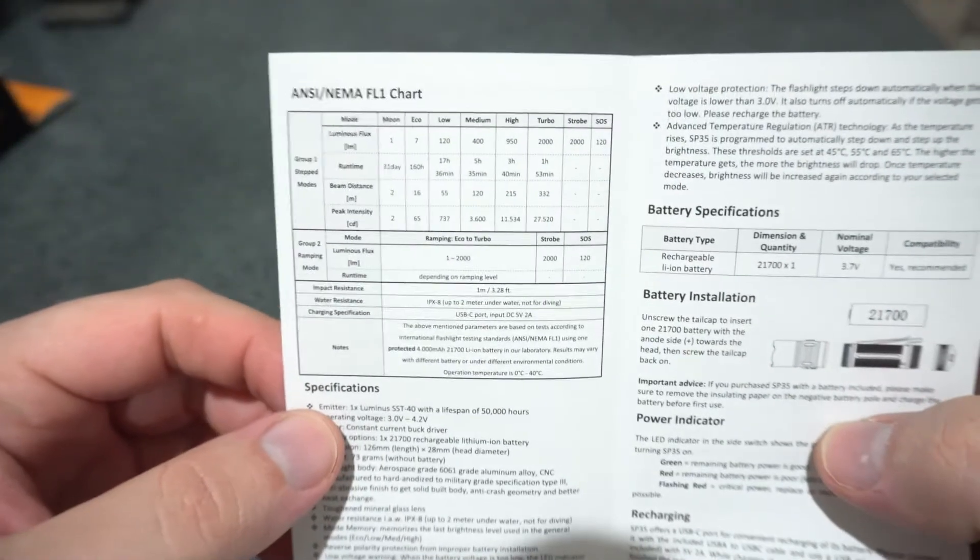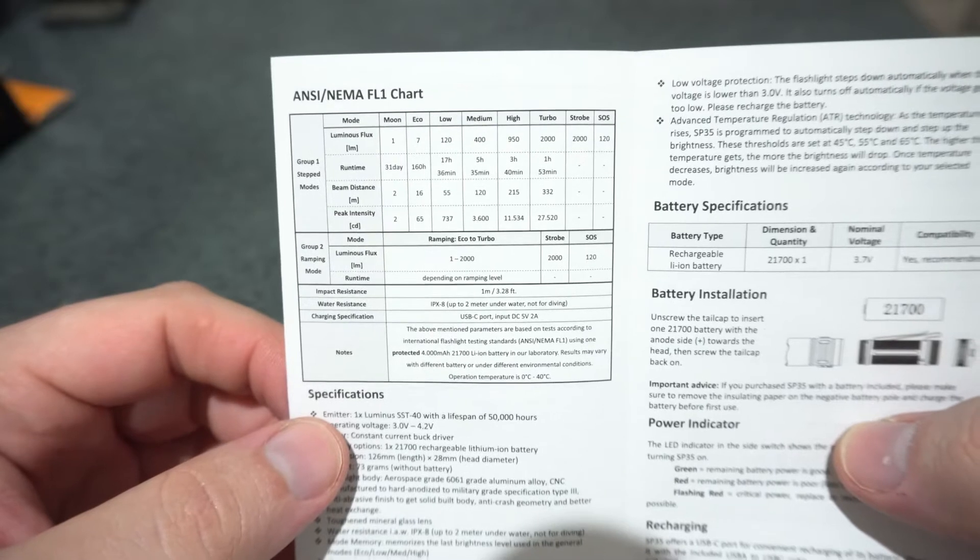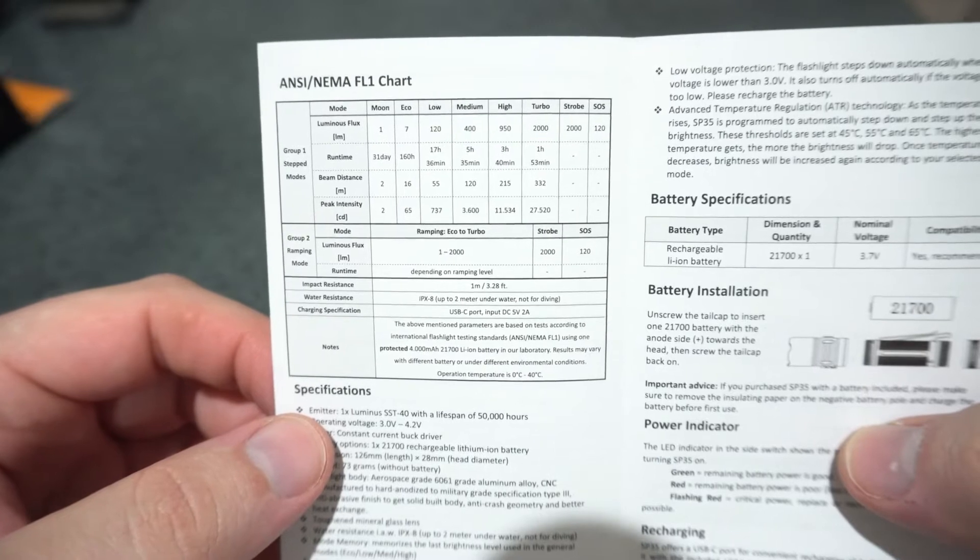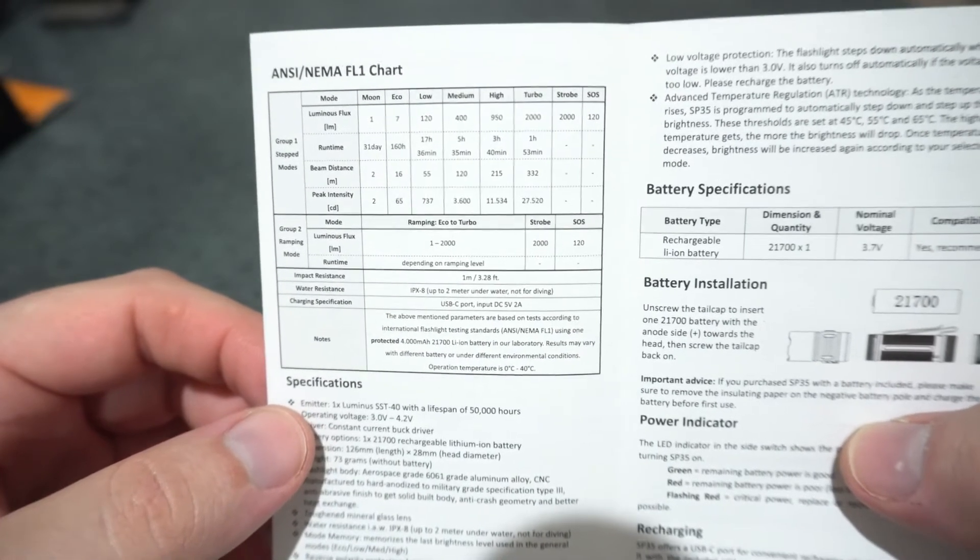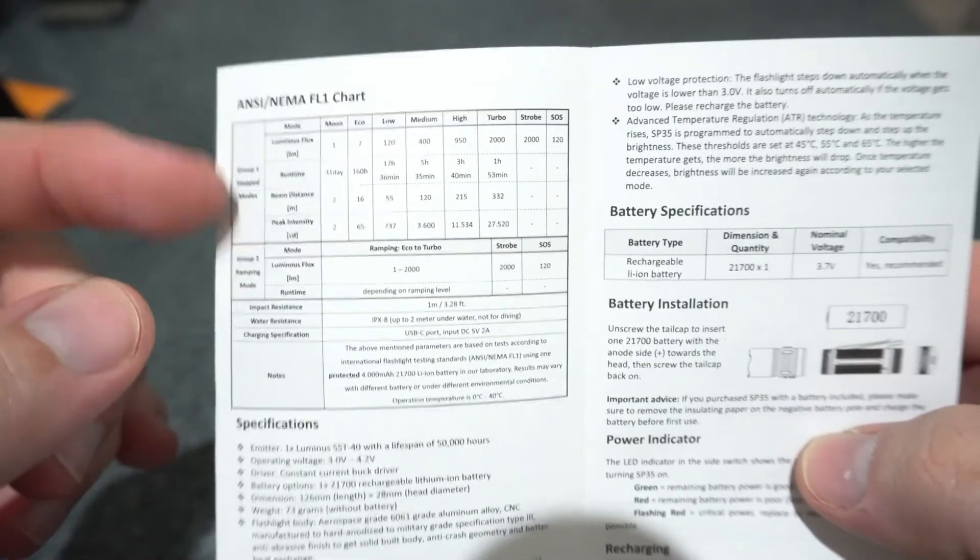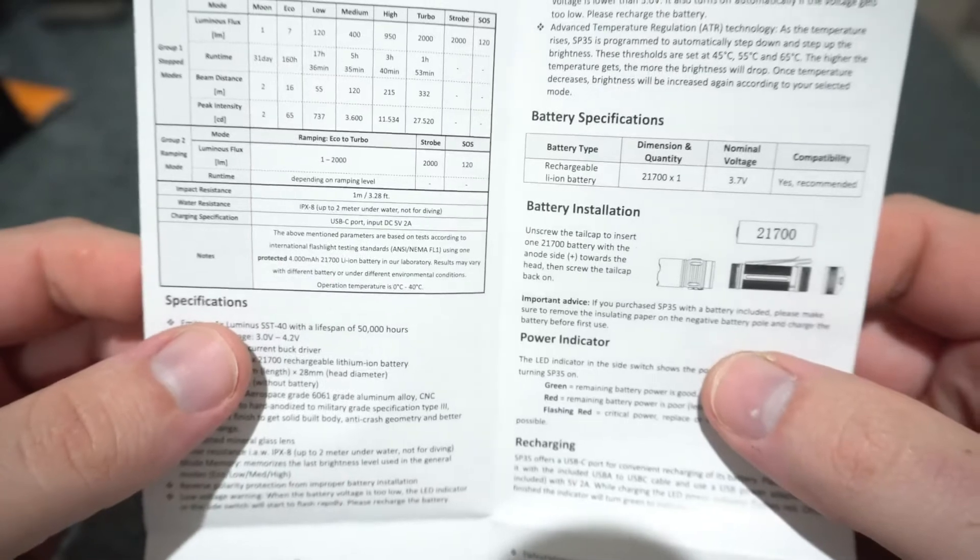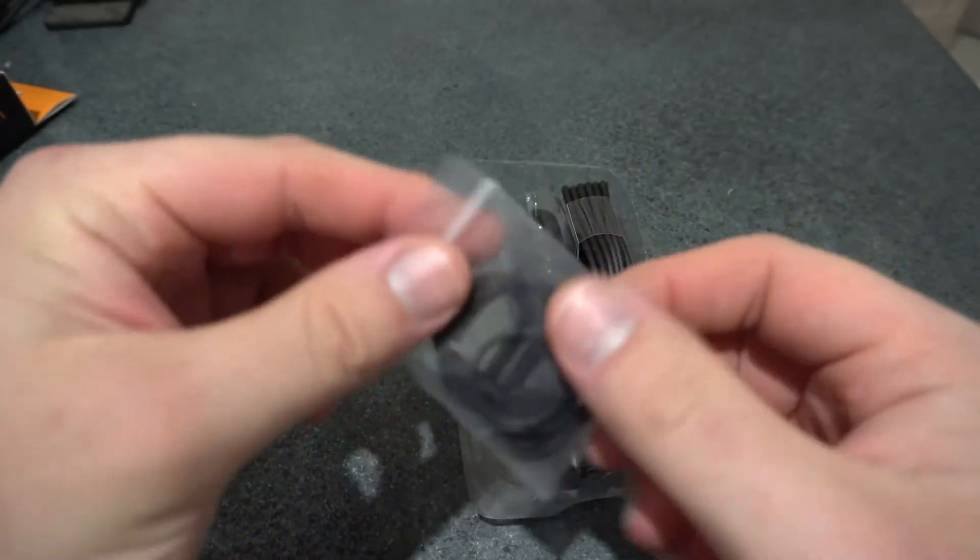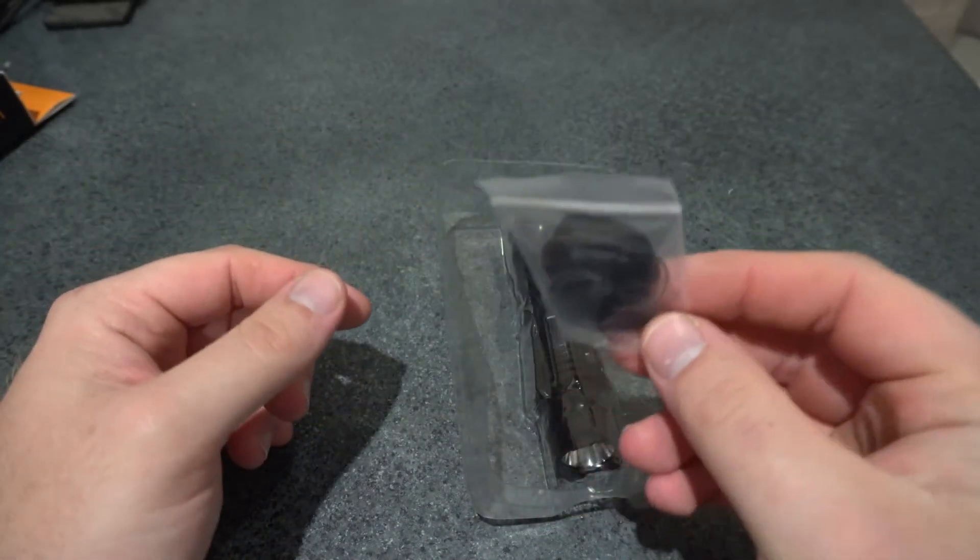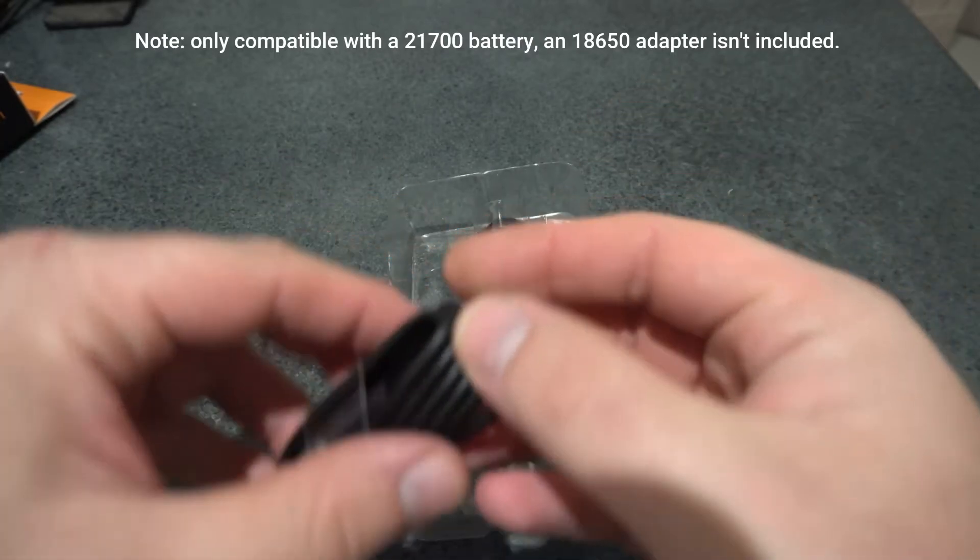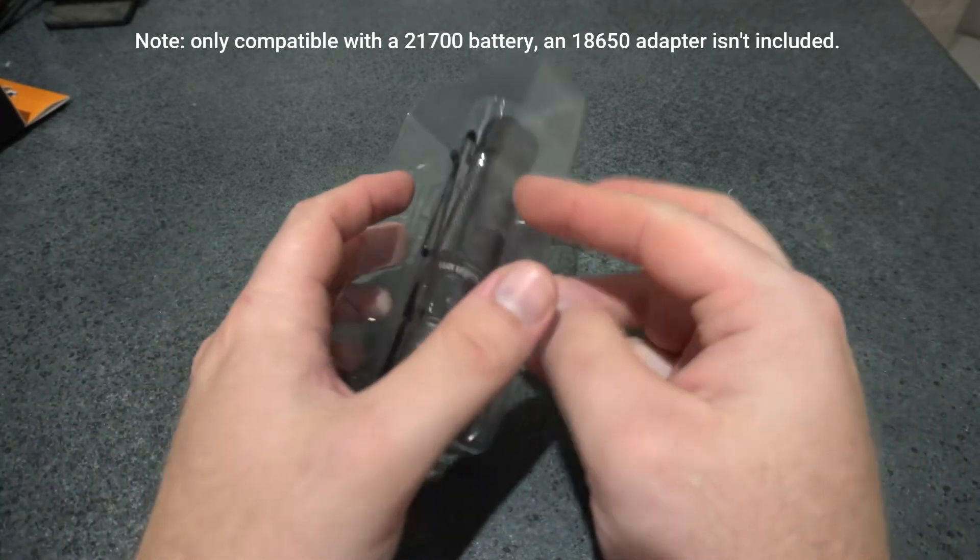Here are the specs here, so it has impact resistance of 1 meter and an IPX rating of 8 for up to 2 meters. Then you've got the modes and your smooth ramping and USB-C charging. Put that to the side. We've got the lanyard and 2 o-rings, just the standard USB-C cable and the light itself.